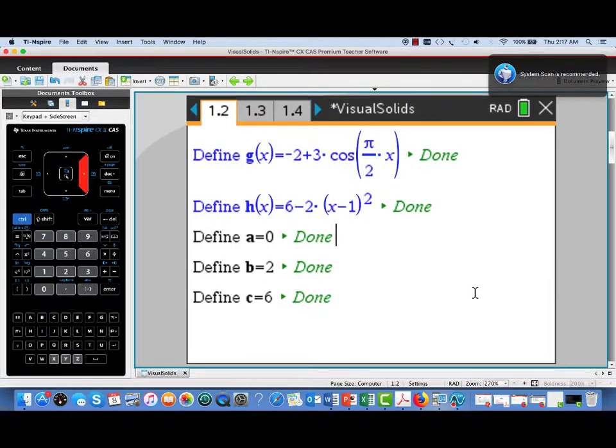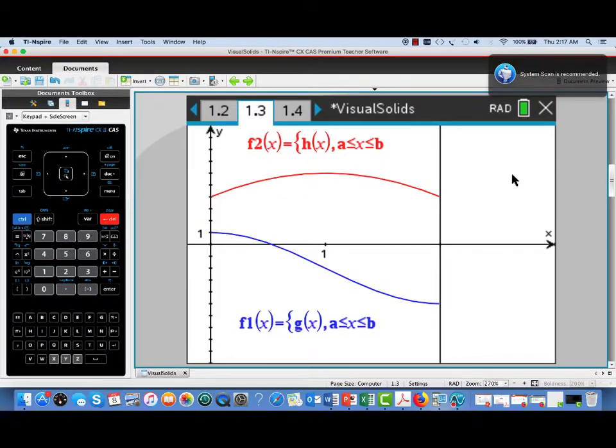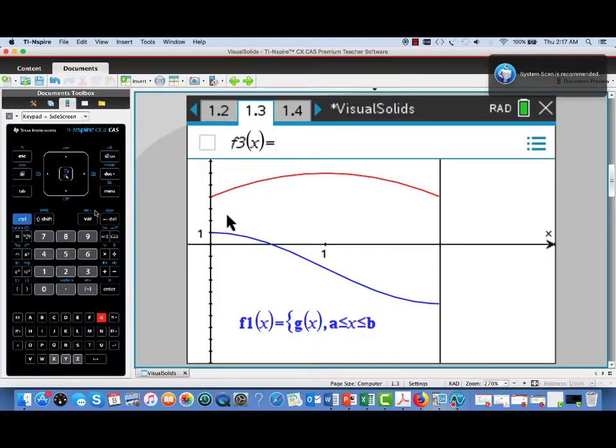Let's look at an example from the 2019 AB exam, number 5. We were presented with a couple of functions. G of x equals negative 2 plus 3 times the cosine of the quantity pi over 2 times x. And h of x equals 6 minus 2 times the quantity x minus 1 squared. A couple of vertical lines at x equals 0, x equals 2. And there was also a horizontal line at y equals 6. Here I'm showing graphically the two curves between x equals 0 and x equals 2. I haven't shown that horizontal line yet, so let's go ahead and graph that.